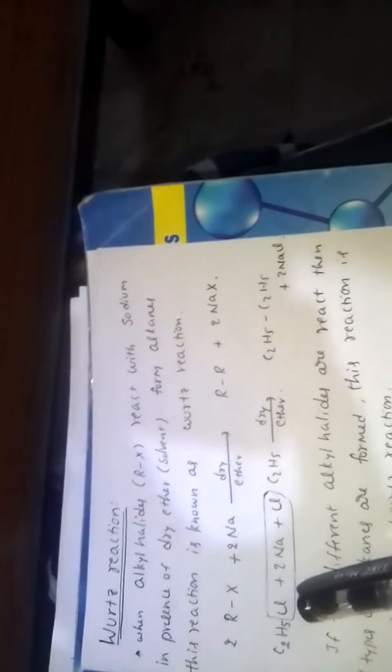For example, in case of alkyl halide, we take C2H5Cl. 2 moles of C2H5Cl ethyl chloride react with 2 moles of sodium in presence of dry ether to form N-butane.